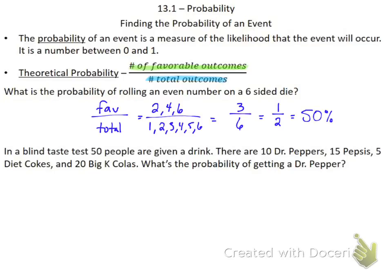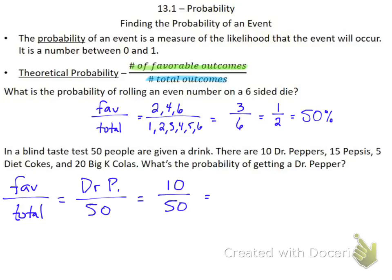The second problem says in a blind taste test of 50 people, 10 Dr. Peppers, 15 Pepsis, 5 Cokes, and 20 Big K Colas are given. What's the probability of getting a Dr. Pepper? My favorable outcome is getting a Dr. Pepper, and the total number of outcomes is all those possible drinks added together — 25 and 25 — so 50 total. The probability of getting a Dr. Pepper is 10 over 50.